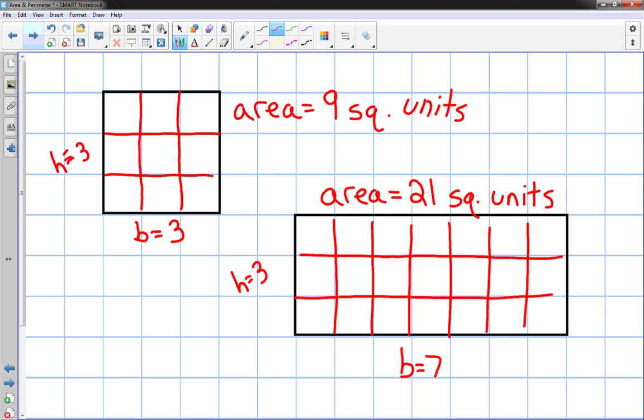Hopefully as students practice this, they're going to realize it's really just the base times the height for rectangles. So in this case it was 7 times 3 is 21, and for the square it was 3 times 3 is 9.